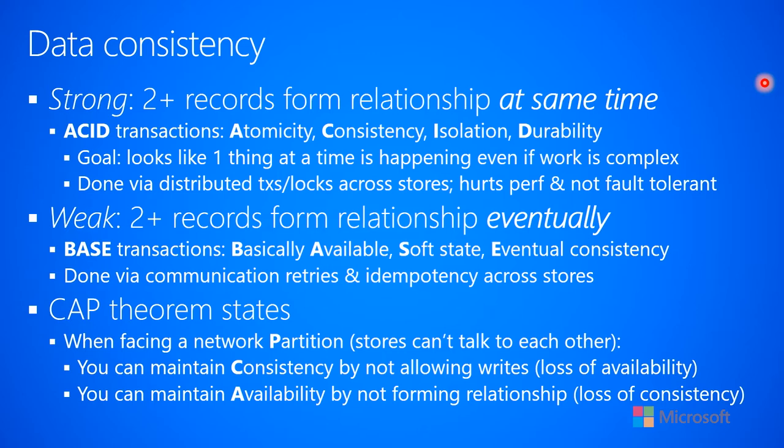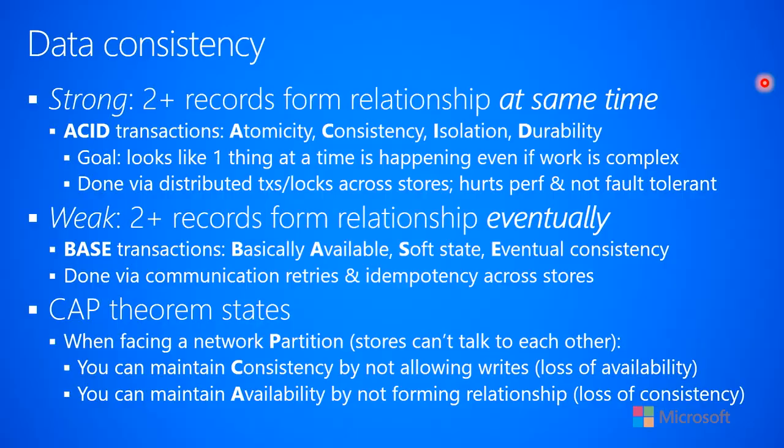You can either maintain consistency of the data by not allowing changes to the data, but then you have a loss of availability. If I can't replicate a change to the other replica because of a network partition, and I care about data consistency, I can't change the data — so I've lost availability of the database. Alternatively, if I want to maintain availability and be able to change the data, then with a network partition I can change it in one replica but not the other, and now I have a loss of consistency.